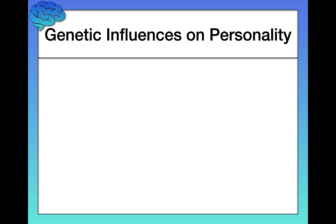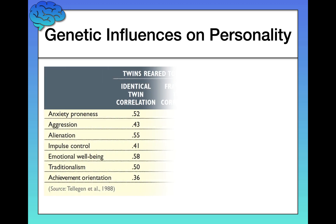We can look to twins with non-shared environments — environments that are unique to each individual. For example, twins reared apart from one another, in addition to looking at those reared together with a shared environment. So let's look at the results from a classic behavior genetic study that did just that.